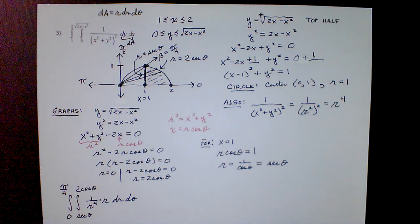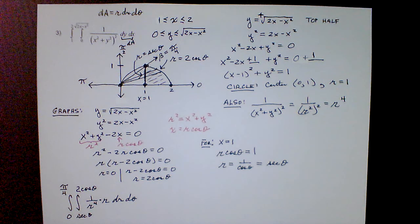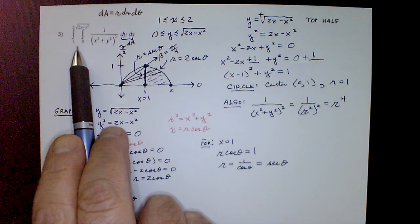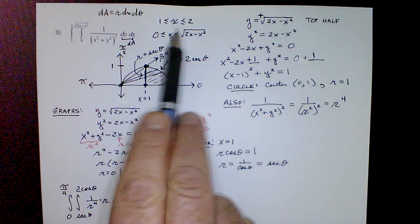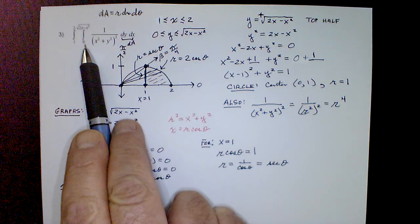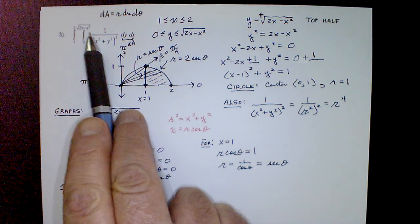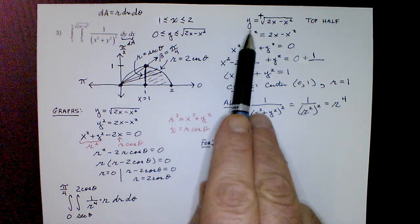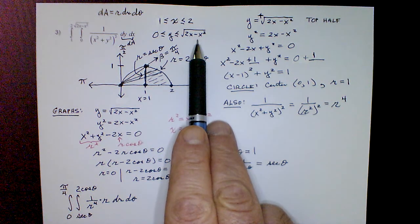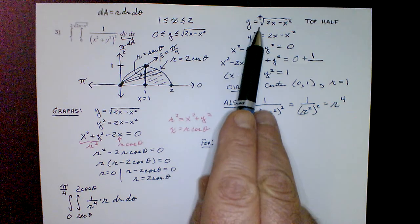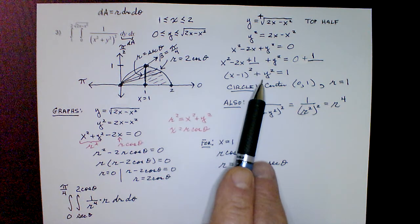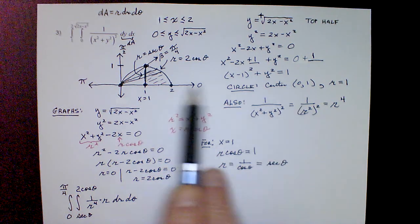Hello everyone, this is Part 3 of Section 15.3, the continuation of double integrals in polar coordinates. We were halfway through an example last time. This was the integral from 1 to 2 for x, and y ranging from 0 to the square root of 2x minus x squared. We had to graph the region, and completing the square showed it was a circle with center (1, 0) and radius 1.